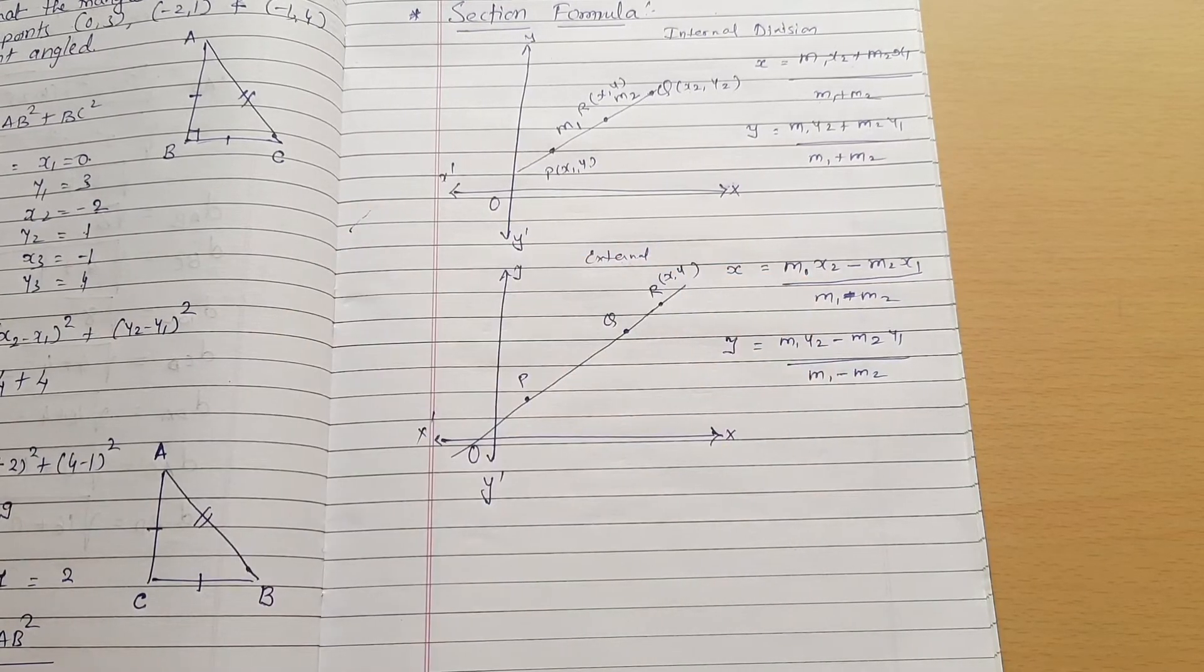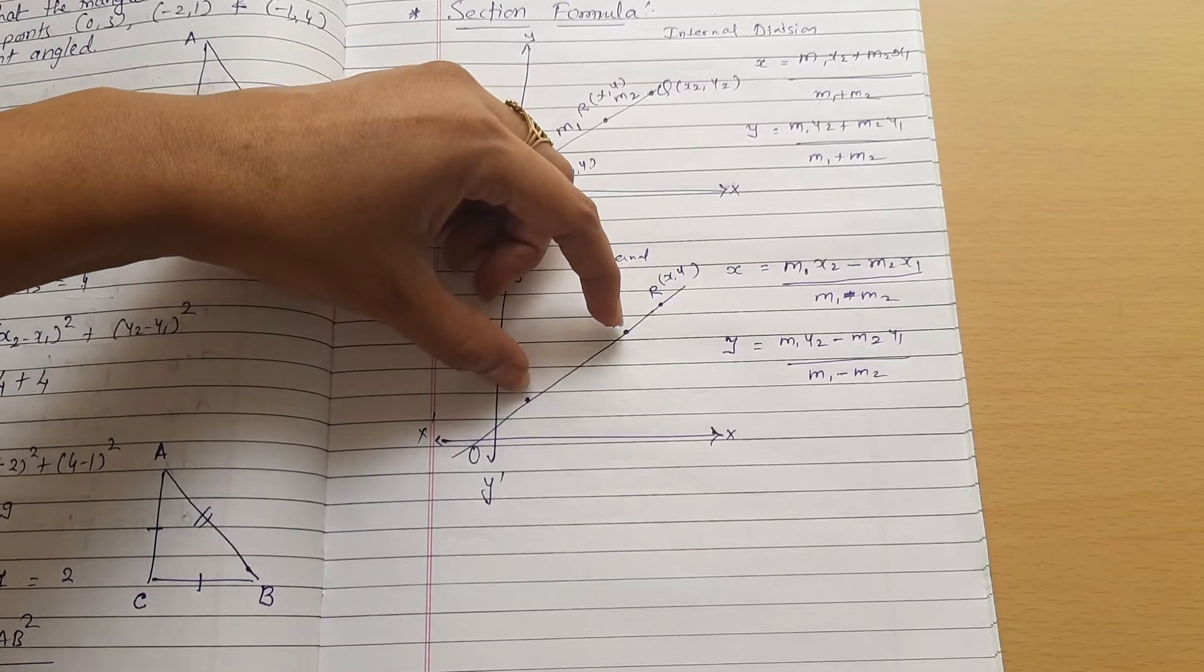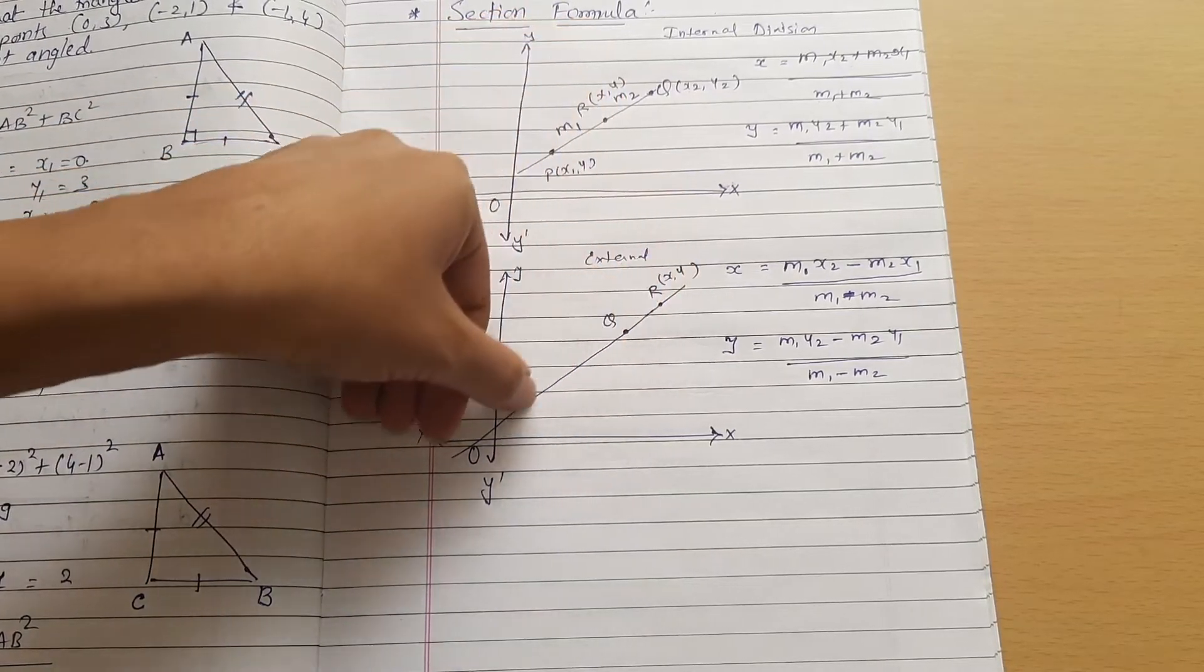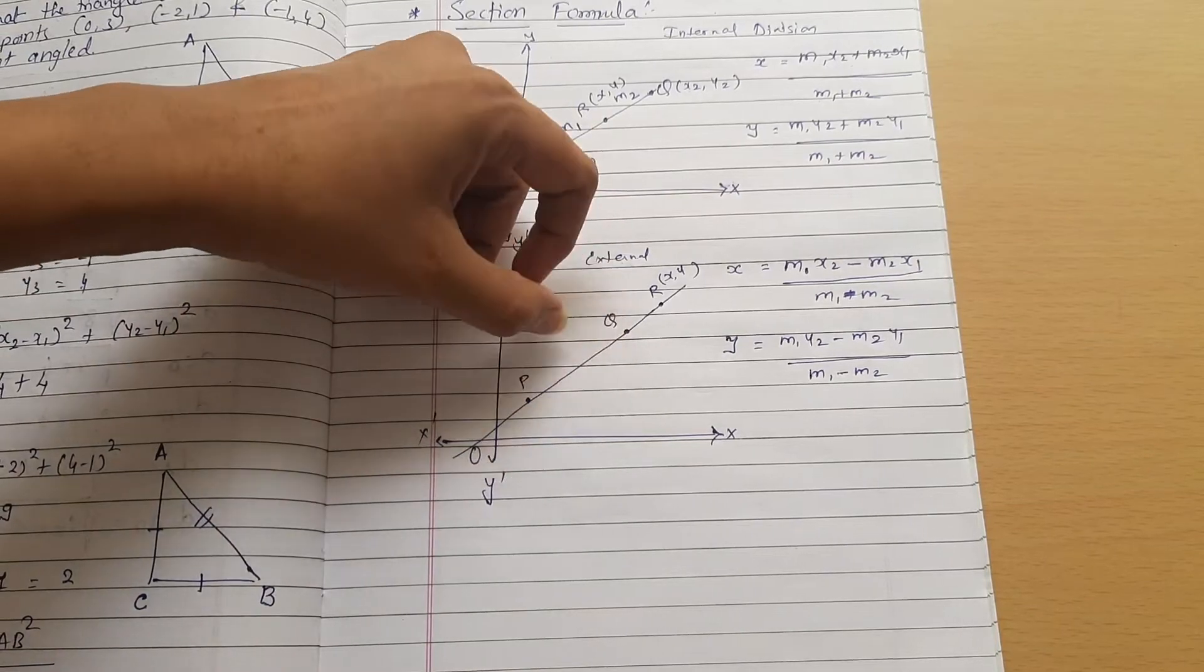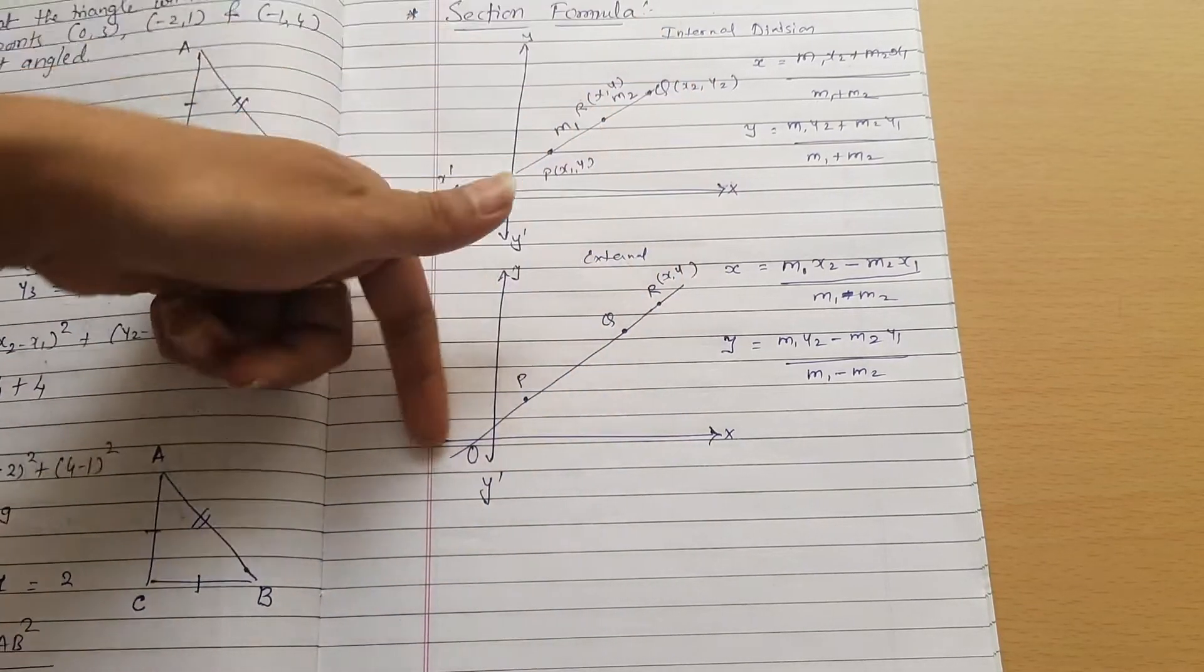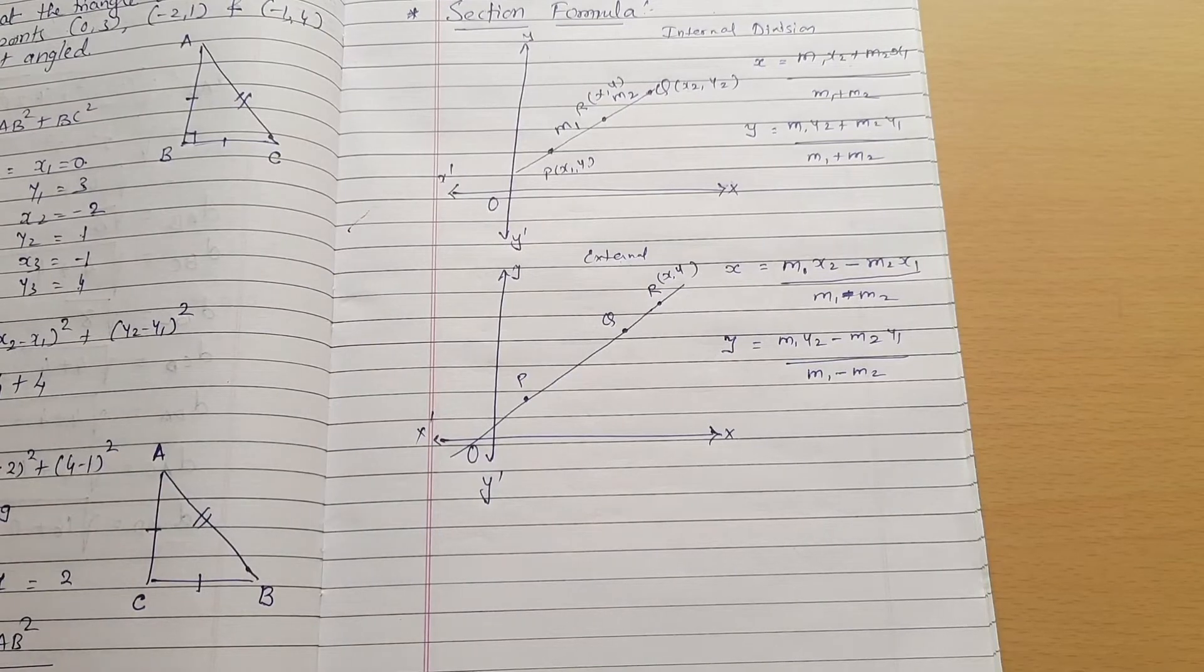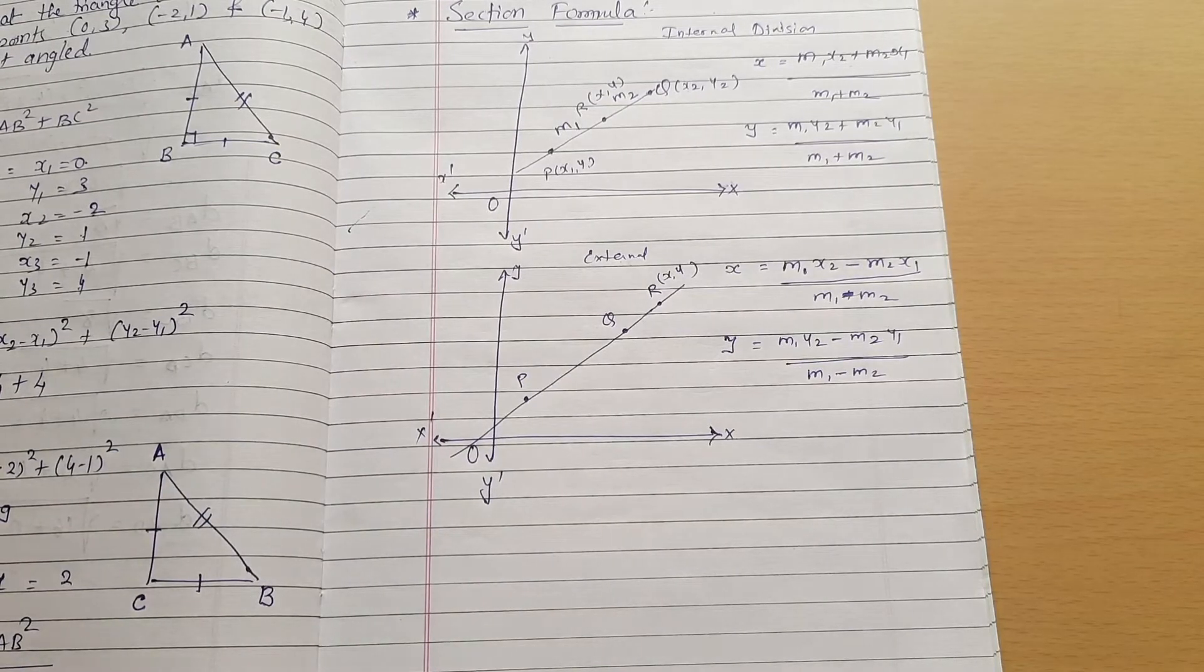External division means the point divides the line externally, not between the two points, but outside either side. So let us start one example related to it.